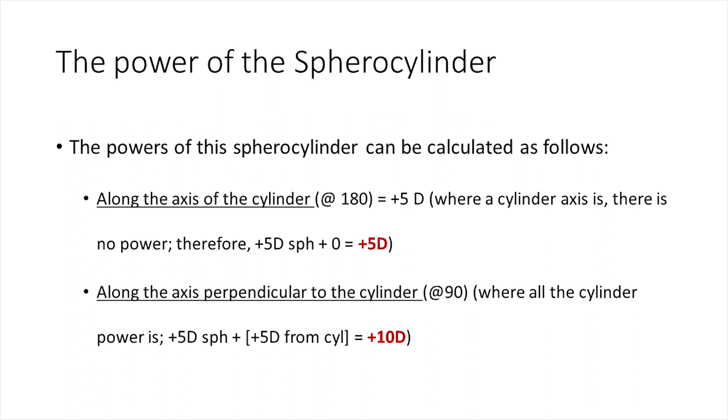Let us pause for a moment to understand what is going on in the spherocylindrical system. The power of the spherocylinder in the horizontal as well as the vertical meridian needs to be understood. As mentioned before, where a cylinder axis is, there is no power. Therefore, in the 180 degree axis, where the axis of the cylinder is, there is zero contribution from the cylinder and therefore, the total power in the 180 degree meridian is only from the sphere, that is plus 5 diopters. In the opposite axis, where all the power of the cylinder is acting, when combined with that of the sphere, the total power in the vertical meridian will be plus 10 diopters.